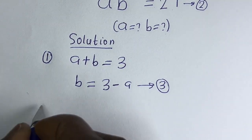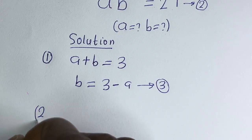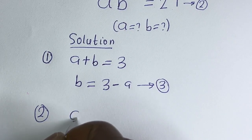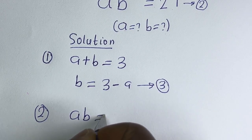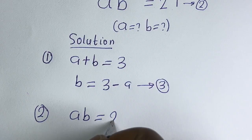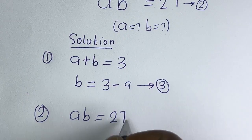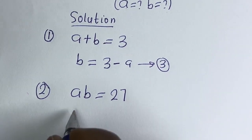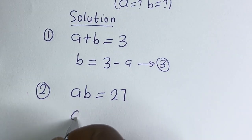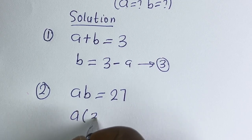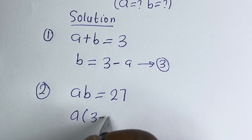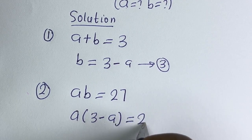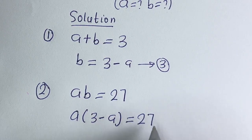Then, from equation 1, a plus b is equal to 3, so b is equal to 3 minus a — let's call this equation 3. Now, from equation 2, a times b is equal to 27. Let's substitute for b.